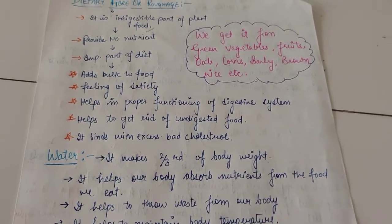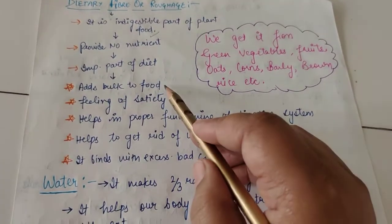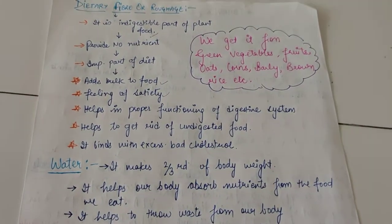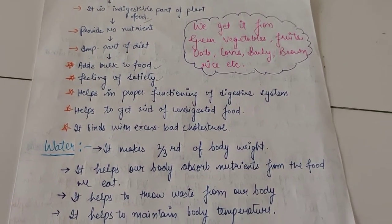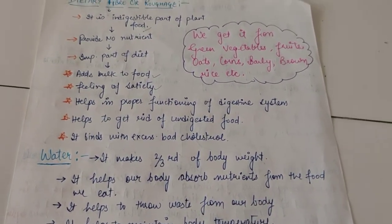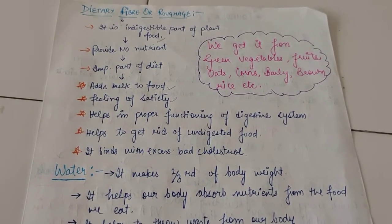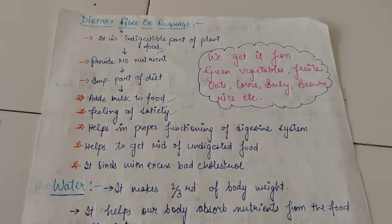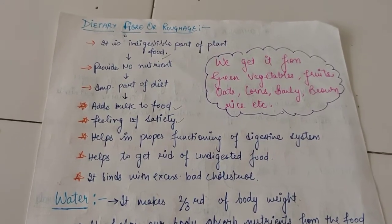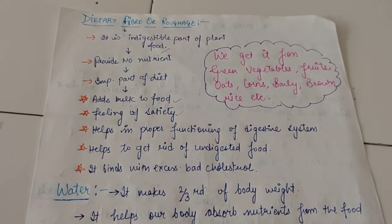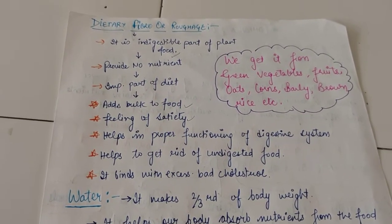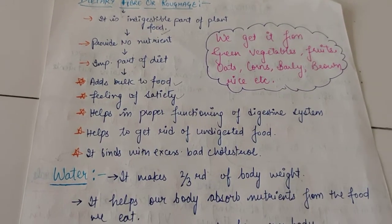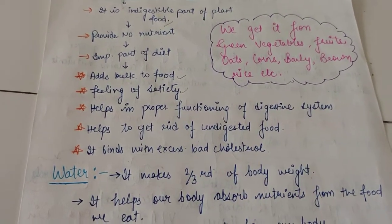Roughage doesn't provide any nutrient, but it is still an important part of our diet. First, it adds bulk to the food and thus gives us a feeling of satiety — a satisfactory feeling that your stomach is full — so you don't eat too much. You must have heard your mother telling you not to drink water in between meals, because water gives you the feeling that your stomach is full. Roughage gives the same kind of feeling.